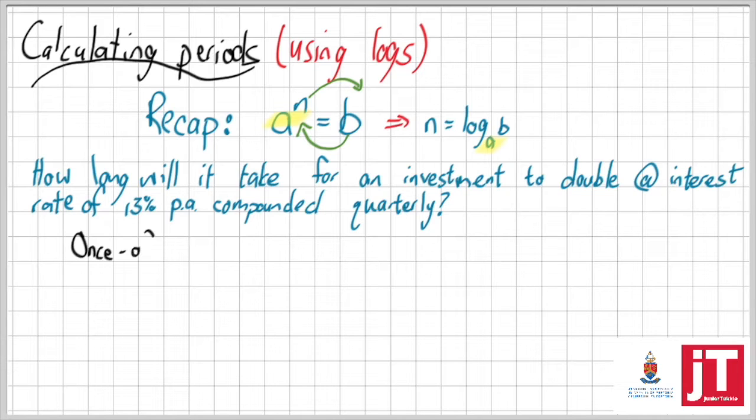Well in this case it's a once-off investment. So I'm going to use A equal to P times (1 plus i) to the n, because they don't tell me it's monthly investments. It's just how long will it take for something to double, so it's a once-off investment. Then I'm going to let my present value be x, which automatically means my A value is 2x.